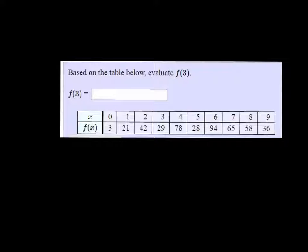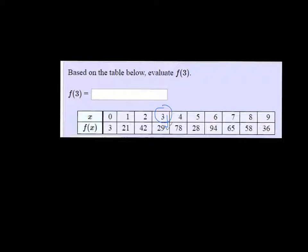Based on the table, we want to evaluate f of 3. What we need to do is look for 3 in the x column, or the x row. So that's going to be right here, and 3 maps to 29, because 29 is right below it. So f of 3 is just 29.